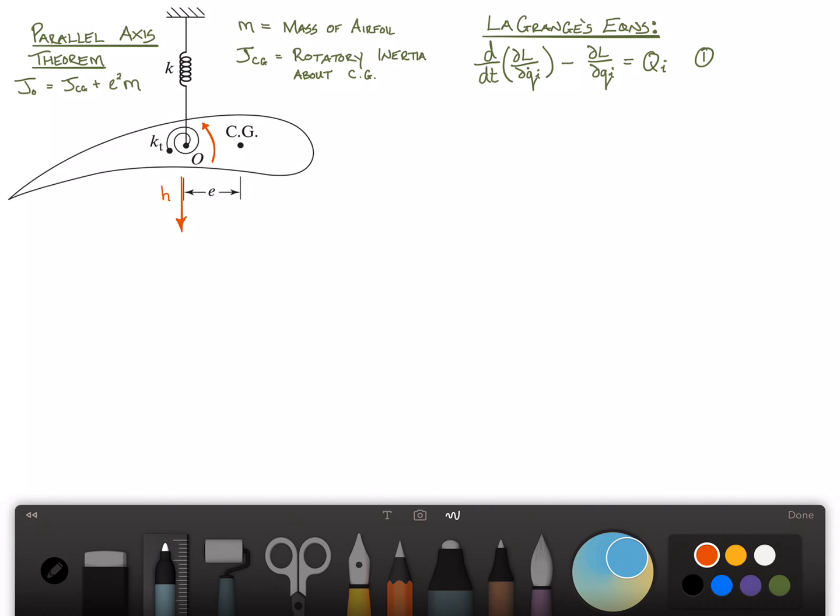I tend to also call this flapping, and I think the heaving comes from analysis of ships, actually. But in aircraft, mostly they call it plunge, and then the angle of attack, which is the angle alpha, the angle of rotation of the airfoil.